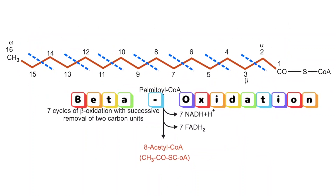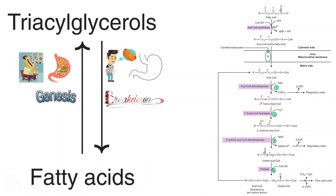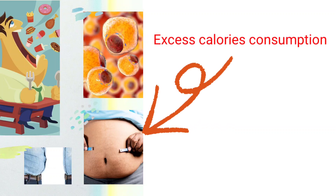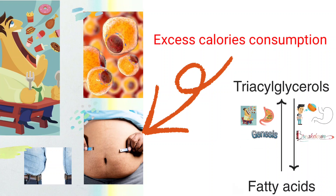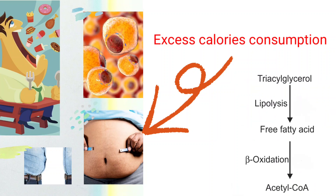Before we jump into the details of beta oxidation, let us quickly refresh our knowledge on fatty acid metabolism. Generally, our body stores excess energy in the form of triglycerides. These triglycerides are basically made up of fatty acids and glycerol. When we need energy, our body breaks down these triglycerides to release fatty acids, and that's where beta oxidation comes into action to release energy from these fatty acids.